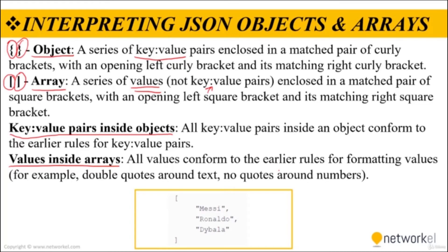The example on screen shows a single array in JSON format. Notice the JSON data begins with a square bracket, then lists three text values: Messi, Ronaldo, and Dybala. The values could have been a mix of value types, and the array ends with another square bracket.